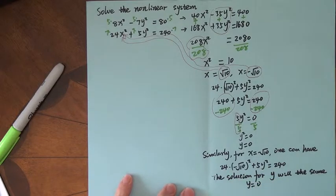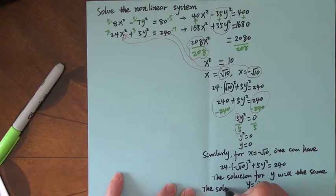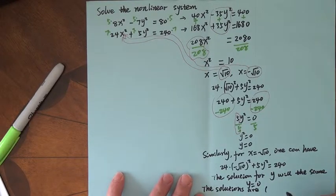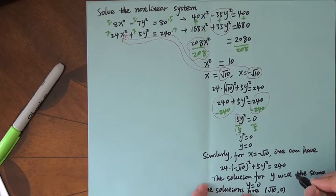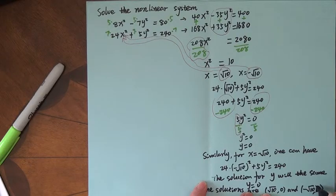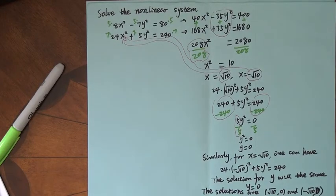Then you may say what? The solution set, the solutions are positive radical 10, 0, and negative radical 10, 0. So let me write this one: (√10, 0) and (-√10, 0).